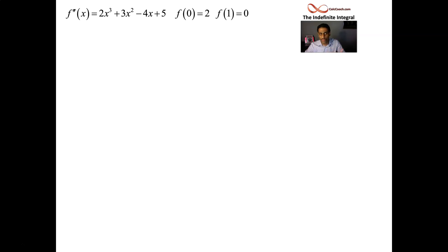We'll go x to the 4th over 4, x cubed over 3, x squared over 2, plus the 5x, plus c. Using the power rule in reverse. Canceling the 3's and the 4's and the 2's. Here's what we have.